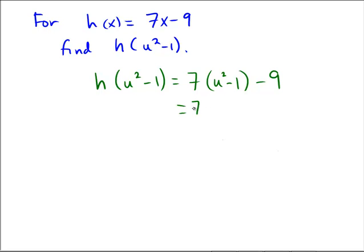So distributive property would give us 7u squared minus 7 minus 9. And after collecting the only like terms that we can, minus 7 minus 9, looks like the final answer is 7u squared minus 16.